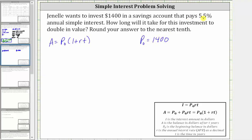The account pays 5.5% annual simple interest, which means R is equal to 5.5%, which must be in decimal form for the equation. 5.5% is equal to 0.055.